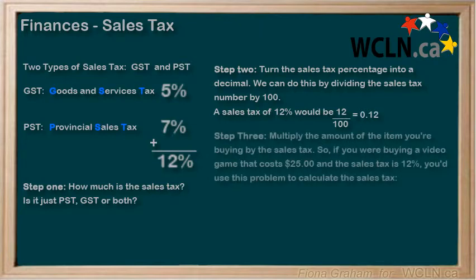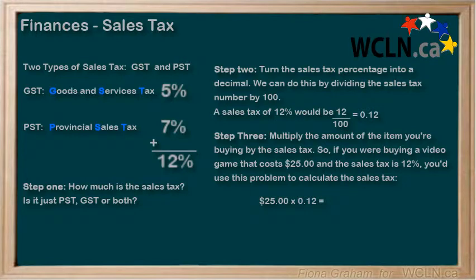Multiply the amount of the item you're buying by the sales tax. So, if you were buying a video game that costs $25 and the sales tax is 12%, you'd use this problem to calculate the sales tax: $25 times 0.12 equals the amount of sales tax to be paid.